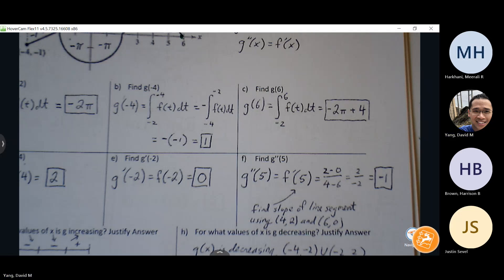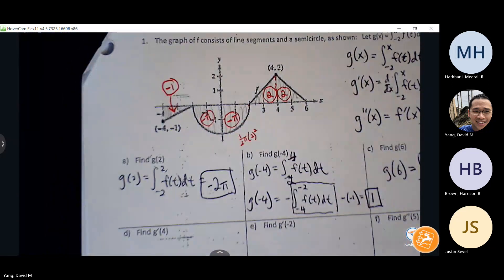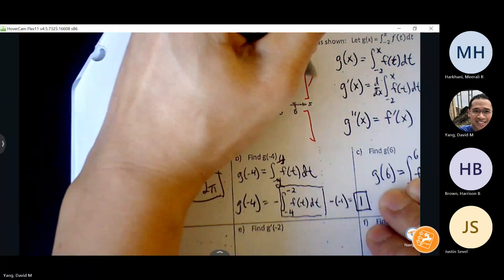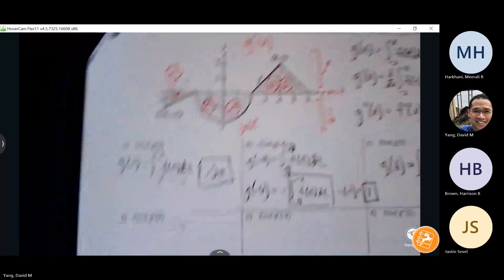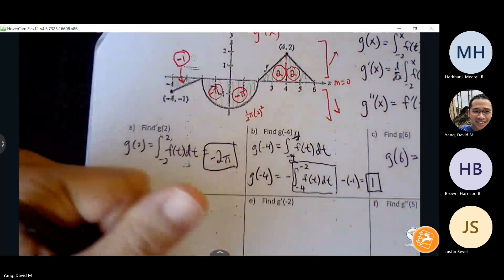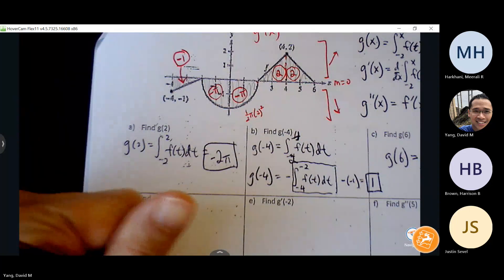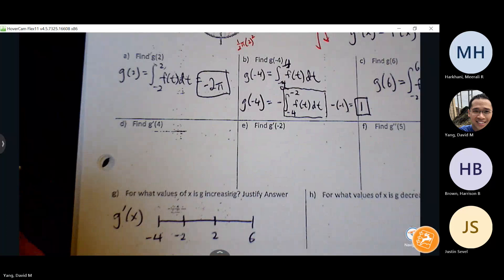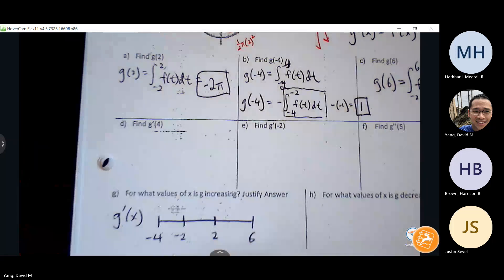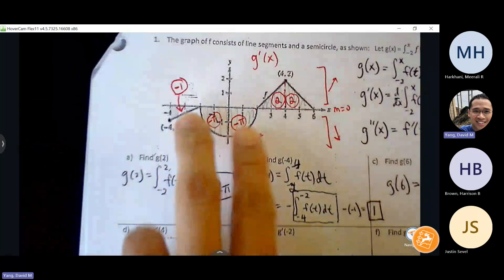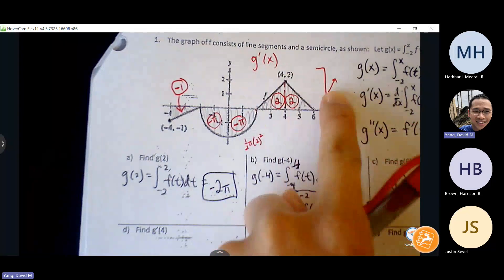So create your slope sign line. Anything above the x axis is positive slope. This is my G prime graph. Negative four negative two is increasing. Negative two to two is increasing. The final piece is above.